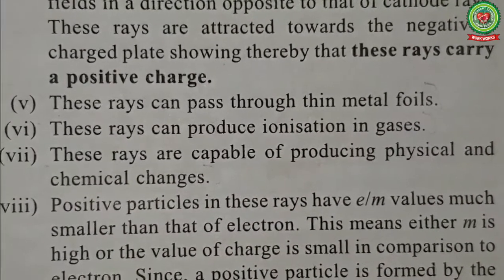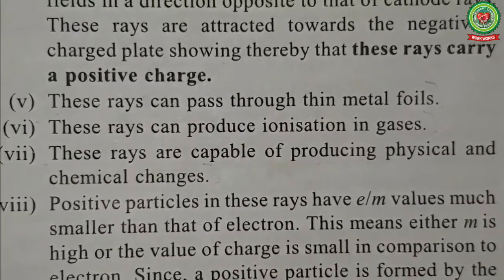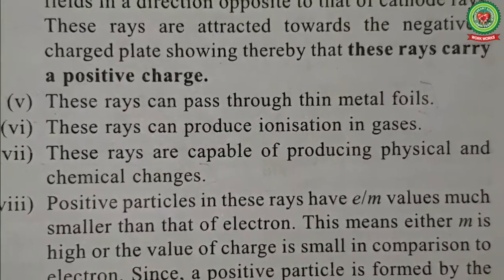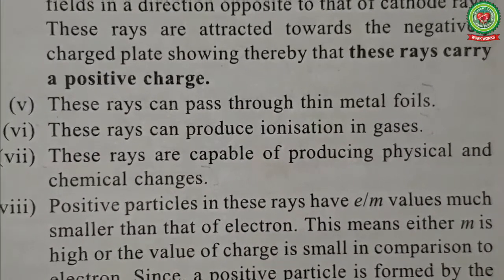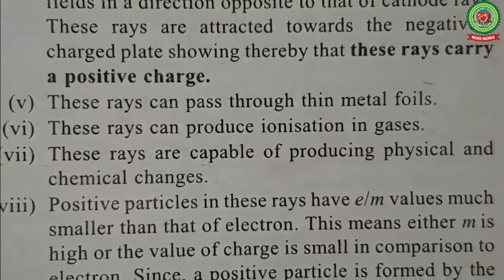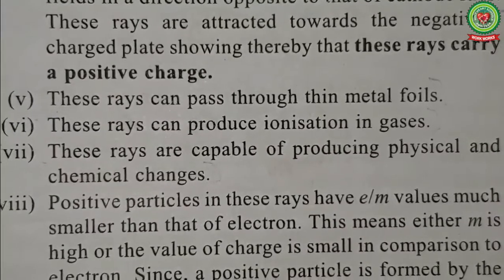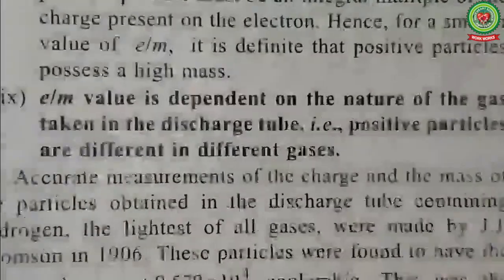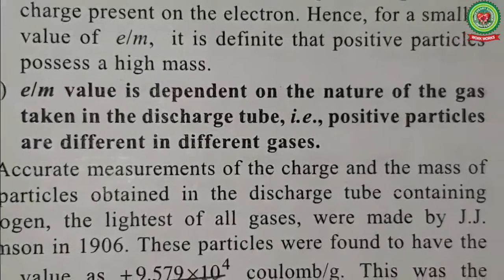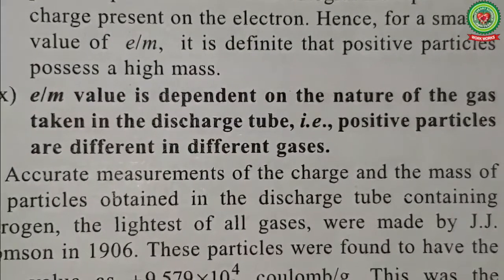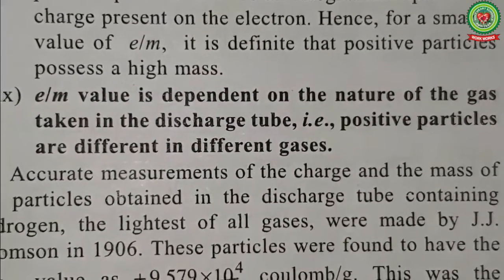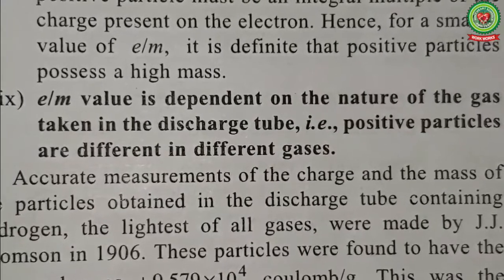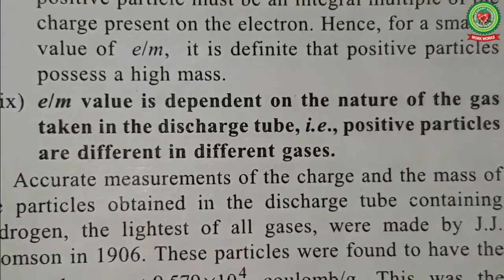These rays can produce ionization in gases — electrons can be knocked out from gas atoms, and the leftover positive part can be used. The rays are also capable of producing physical and chemical changes. An important point is that the charge-to-mass ratio (e/m) is dependent on the nature of the gas taken in the discharge tube.